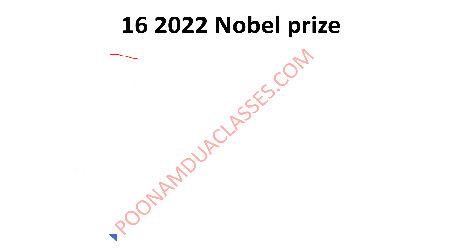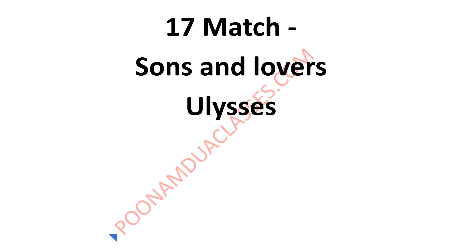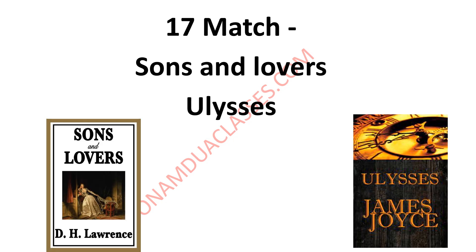Then there was a question about the 2022 Nobel Prize — it was given to Annie Ernaux. This is the right answer. Then again there was a matching question of Sons and Lovers and Ulysses; the other two options of that question could not be recalled. Sons and Lovers is by D.H. Lawrence and Ulysses is by James Joyce.